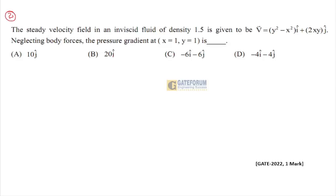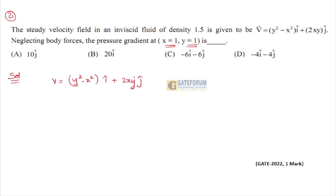Going to the next question: a steady velocity field in an inviscid fluid of density 1.5 is given as V = (y² - x²) î + 2xy ĵ. Neglecting body forces, find the pressure gradient at x = 1 and y = 1. The options are: (a) 10ĵ, (b) 20î, (c) -6î - 6ĵ, (d) -4î - 4ĵ.